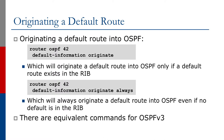To originate a default route in OSPF, we use the command 'default-information originate' under the router OSPF process. This will originate a default route into OSPF only if a default route exists in the RIB. For those of you who are used to IS-IS, this is different behavior. If we always want to originate a default route regardless of whether there's one in the RIB or not, we go to the OSPF process and use 'default-information originate always'.